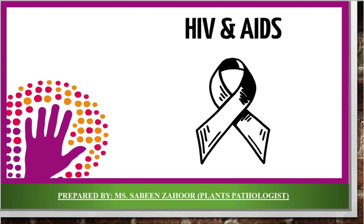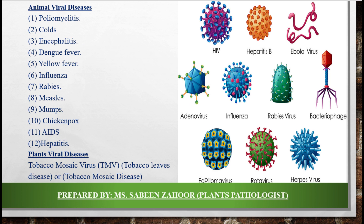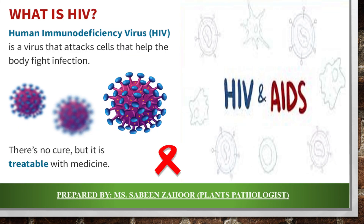First of all, we have to discuss what is a virus. A virus is an obligate parasite. It is inactive and acts as a non-living thing outside any living host. When it enters any living host — whether plant, animal, or human beings — it becomes active. When the genetic material is inside a living host's body, the virus is considered a living thing, as the reproduction process occurs and it causes diseases. Virus causes many diseases in animals like poliomyelitis, cold, encephalitis, dengue fever, yellow fever, influenza, rabies, measles, mumps, and chickenpox.